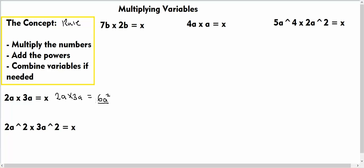Now here we have 2a² multiplied by 3a², and this can be written as 2a² multiplied by 3a² is equal to x.